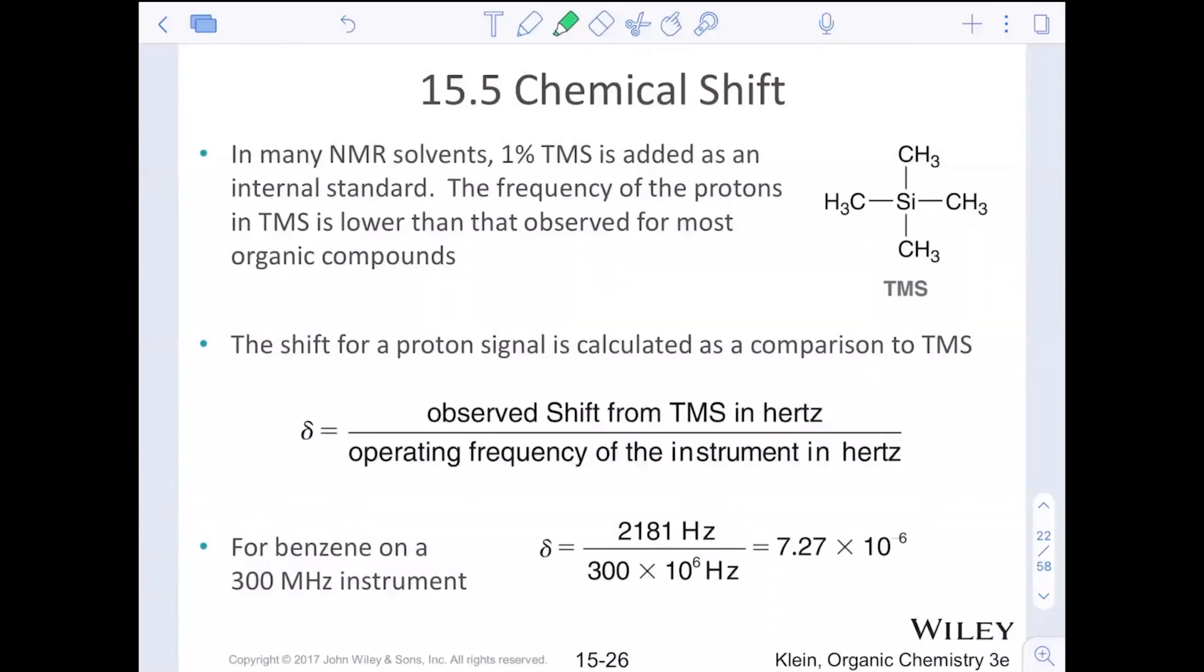Okay, let's continue on with our chemical shifts. Now we saw the first characteristic was the number of protons, the number of signals in an NMR spectra. The next characteristic we're going to talk about is chemical shift.